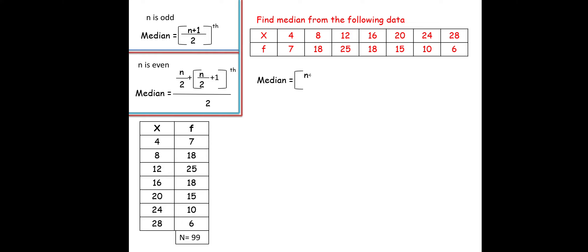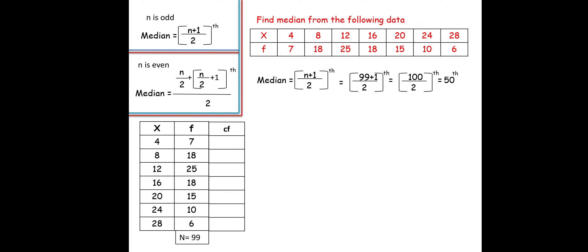The formula is: median = (n+1)/2 th observation. Substituting n = 99: (99+1)/2 = 100/2 = 50th observation. Now, where exactly is this 50th observation? We add a cumulative frequency column: 7, 7+18=25, 25+25=50, 50+18=68, 68+15=83, 83+10=93, 93+9=99. We need to find where the 50th observation occurs.